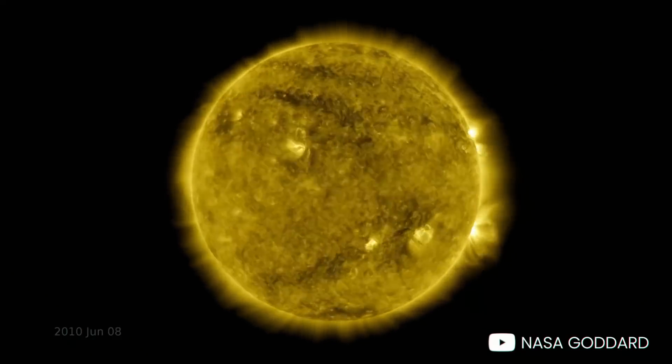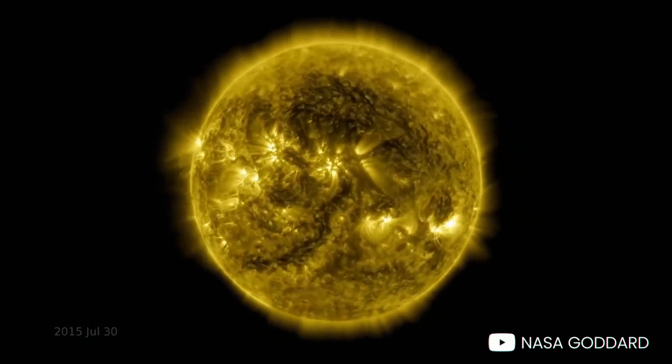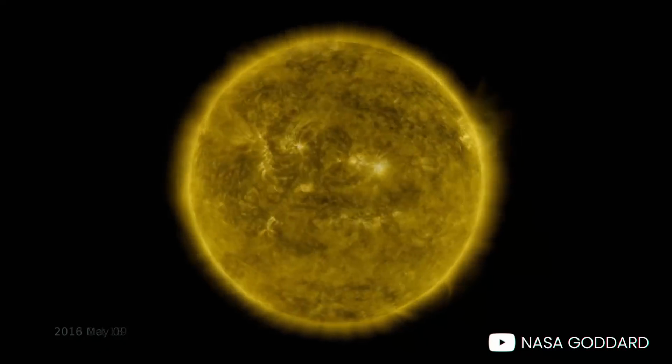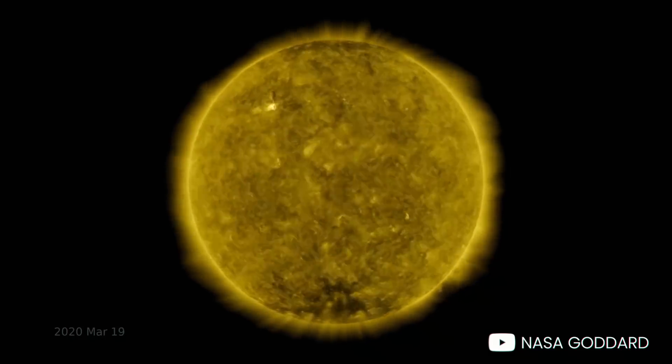It's been recording the Sun for over 10 years, and in time-lapse footage, you can see an extreme ultraviolet wavelength showing the Sun's outer corona and the rise and fall of the solar cycle.